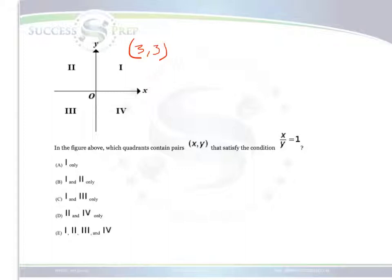For quadrant 2, (-3, 3) would be good values. For quadrant 3, (-3, -3). For quadrant 4, (3, -3) would be good values.